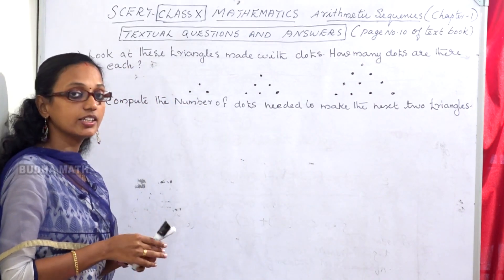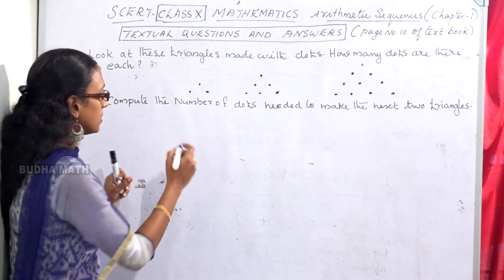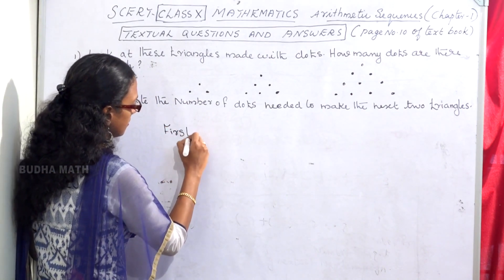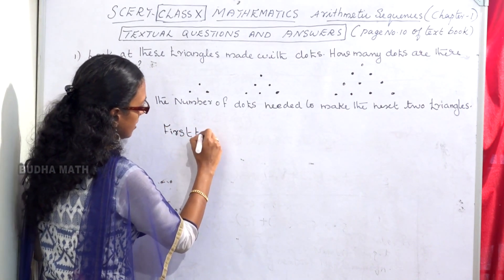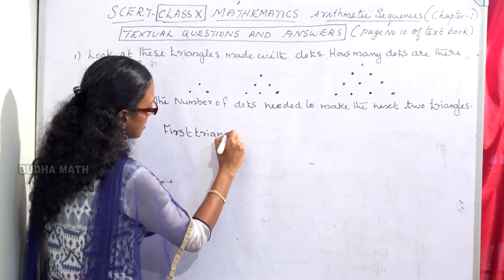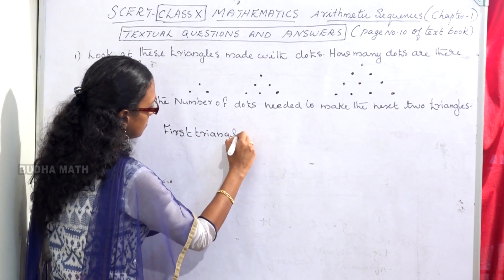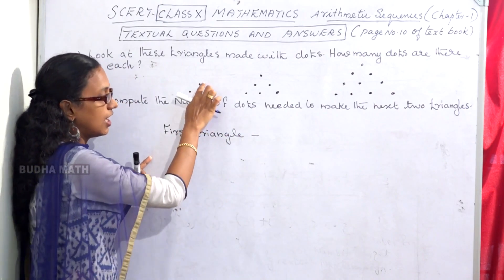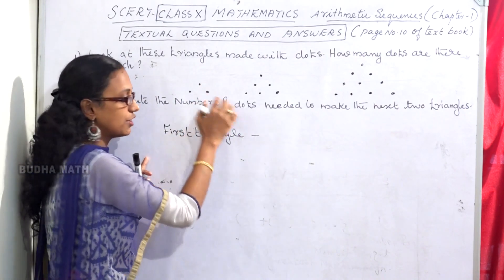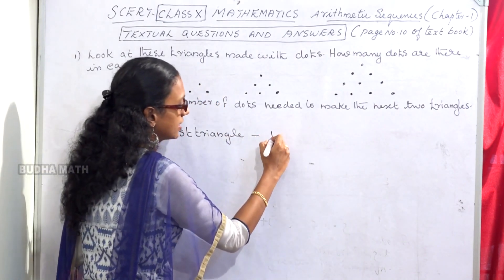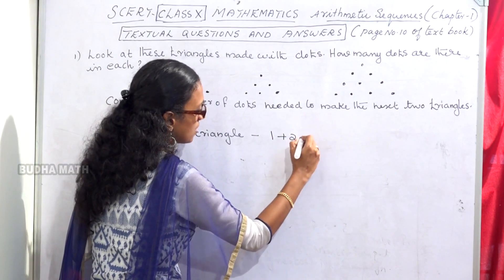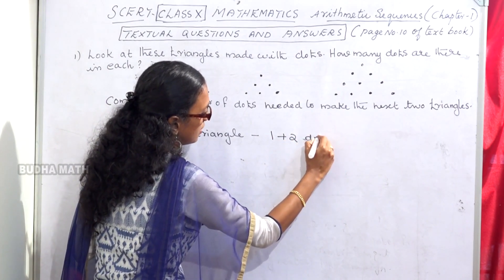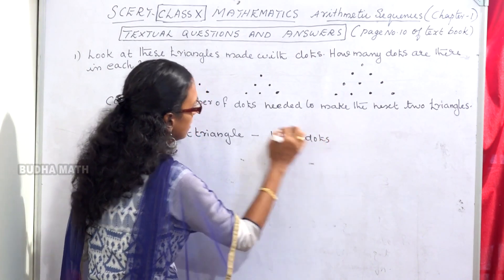Let us call this one dot. This one dot is equal to 1 plus 2 dots.